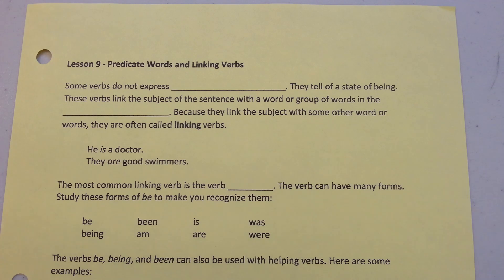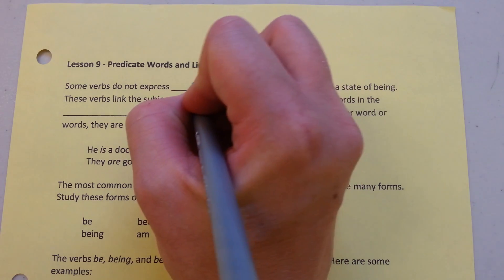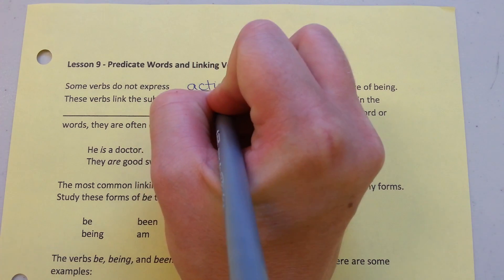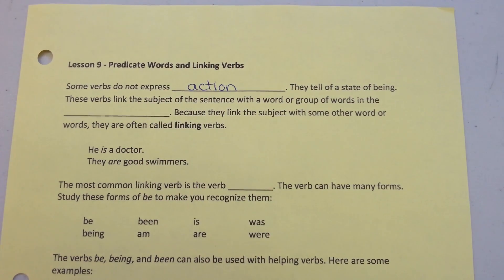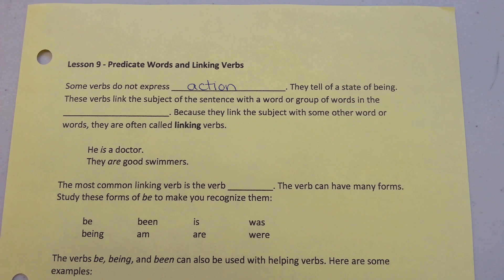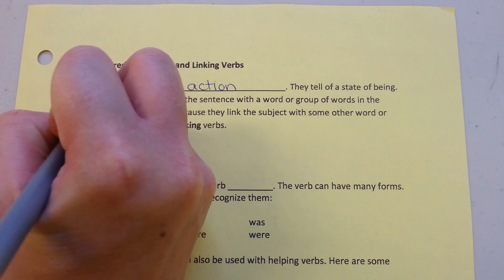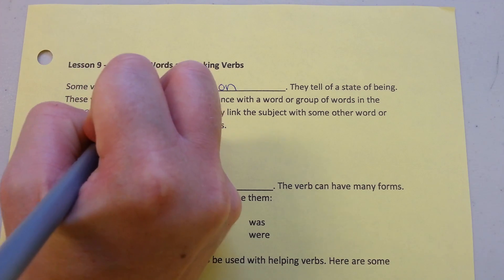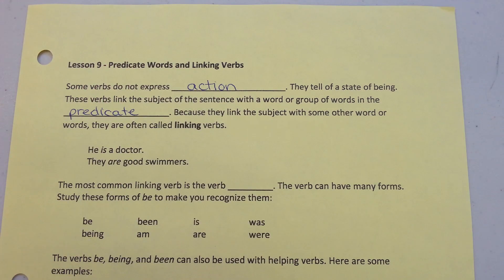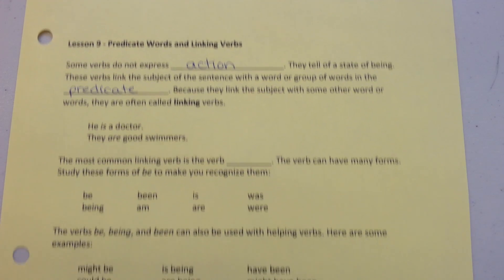Lesson 9: Predicate words and linking verbs. Some verbs do not express action — they tell of a state of being. These verbs link the subject of a sentence with a word or group of words in the predicate. Because they link the subject with some other word or words, they are often called linking verbs.